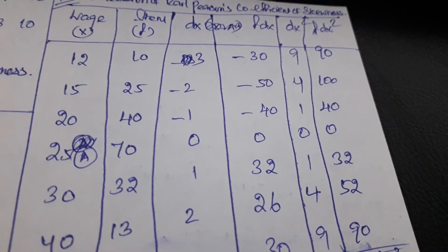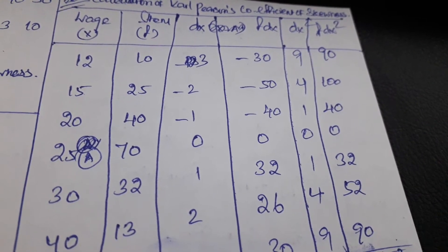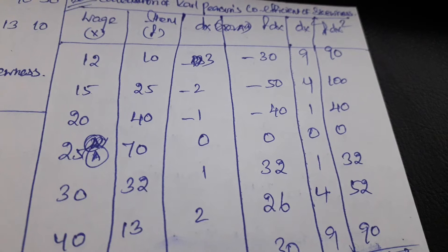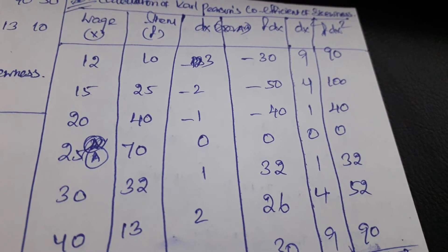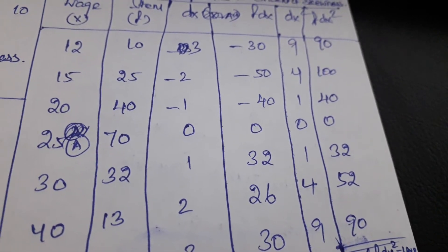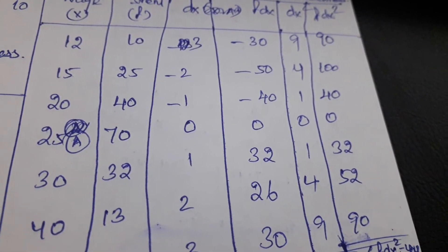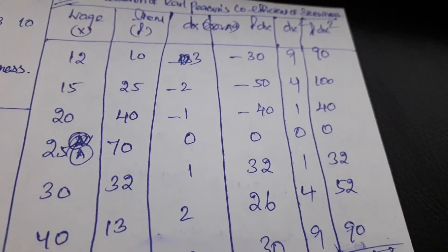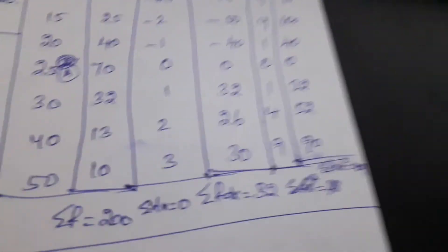Then we need to find out the f of dx. Just multiply the frequency and dx, we can get f of dx, and add them. We need to add them to find out the summation of f of dx.